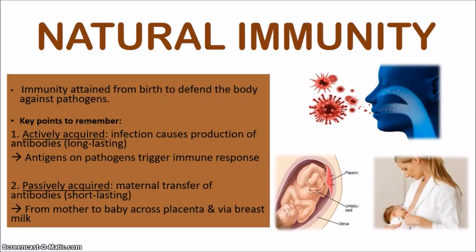It can either be actively acquired or passively acquired. Actively acquired natural immunity requires an infection — you need to get an infection in order to attain this type of immunity. When the pathogen gets into the body, the antigens on the surface of the pathogen trigger an immune response, meaning the lymphocytes and phagocytes work together to get rid of the pathogen. The key point is that your body will actually be producing its own antibodies against the antigens on the pathogens, so this type of immunity is long lasting.